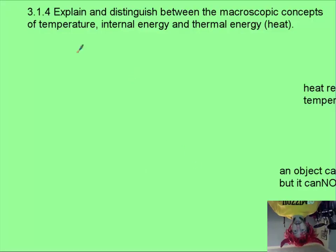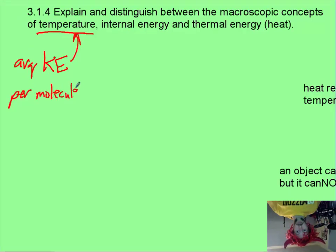Just to sum up this intro, let's look at some terms that you want to make sure you distinguish. Temperature: make sure you know that is going to be the average kinetic energy per molecule in a substance. Internal energy is going to be the sum of the kinetic energy of all the molecules plus the potential energy of all the molecules happening in there.